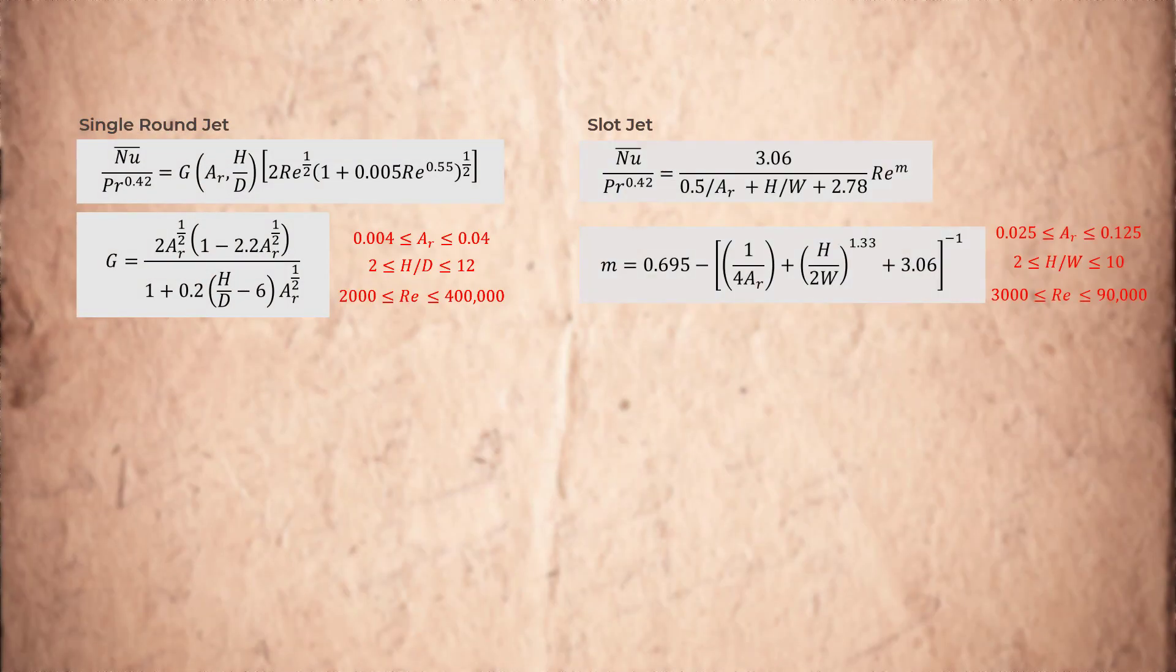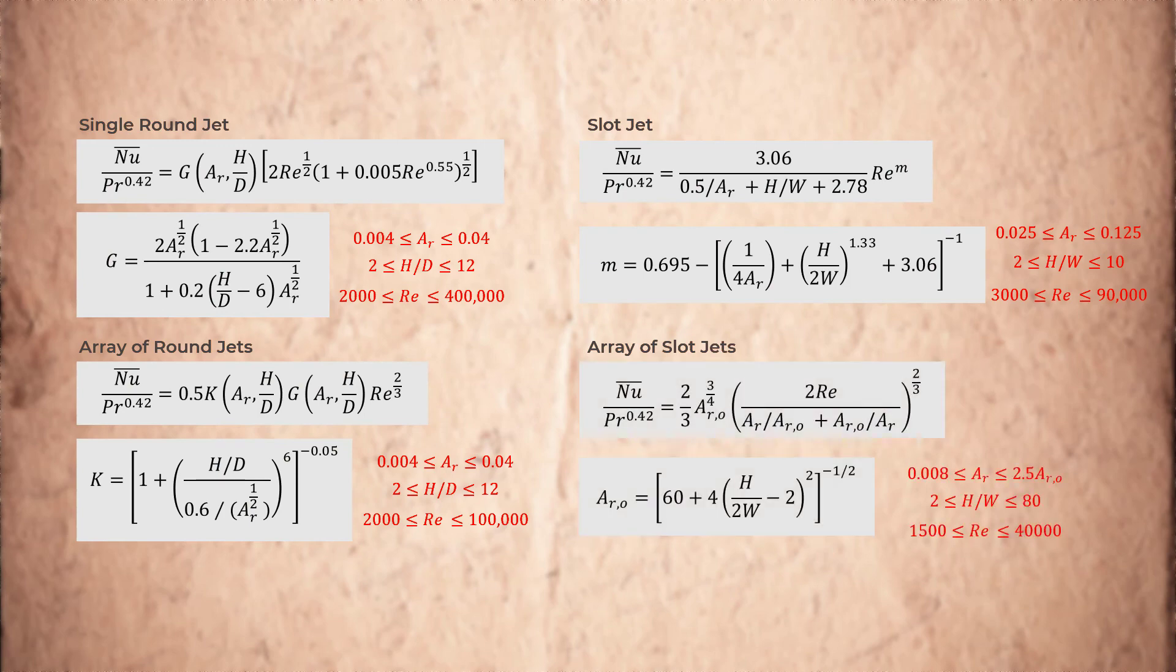For jet arrays, interaction of adjoining jets also results in secondary maxima. For such configurations, the heat transfer distribution is 2D, which means that variations of heat transfer coefficient can be observed in both directions parallel to the surface. Different correlations exist depending on the nozzle geometry and whether the configuration is a single nozzle or an array of nozzles. The parameters that appear in these correlations such as the nozzle exit area, nozzle plate separation distance, and the Reynolds number have a specific range over which the correlations are valid.